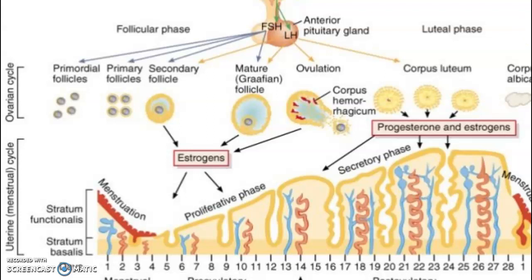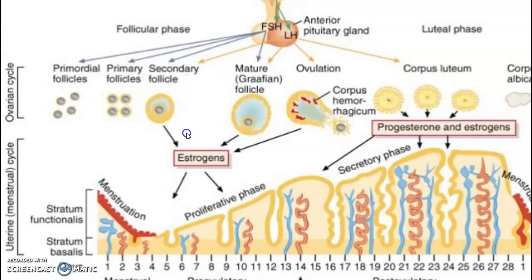In summary, FSH and LH are released from the anterior pituitary. FSH acts on the ovary and signals the follicles to develop — in response to FSH, primordial germ cells develop into primary follicles. FSH is continuously released during the follicular phase, causing primary follicles to form secondary follicles and then Graafian follicles. Once secondary and Graafian follicles form, they also have a secretory function and start releasing the female hormone estrogen.